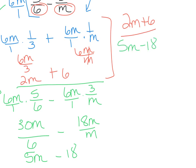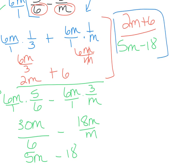This is your final answer. The only thing you need to check is reducing. There is a GCF — you could factor out a 2 from the numerator — but there is no GCF in the denominator, so that 2 won't reduce with anything. It's always nice to check. This is your final answer for example 1.